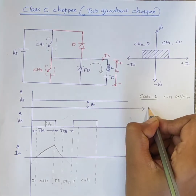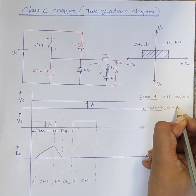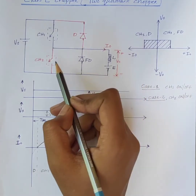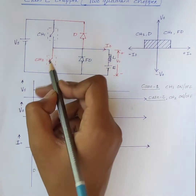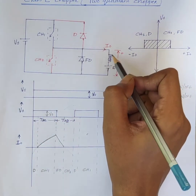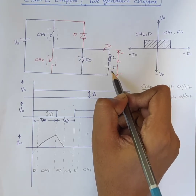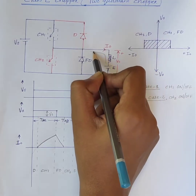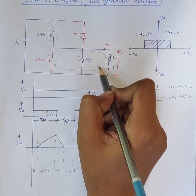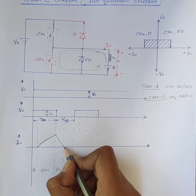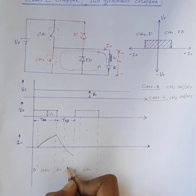Consider Case 2: when CH2 is on or off. When chopper CH2 is switched on, it acts as a short circuit and the output voltage V0 is equal to 0. But due to the presence of the load DC source, it drives the current through inductor L, CH2, and to the load. The direction of current flow I0 is negative. Therefore, the output current I0 increases in the negative direction when CH2 is on.